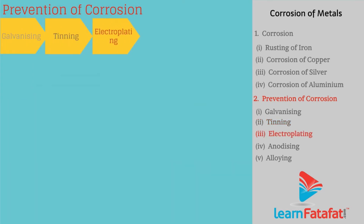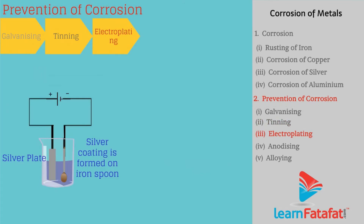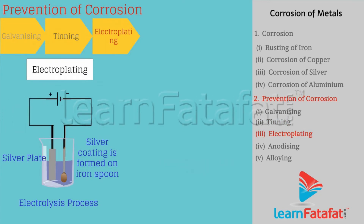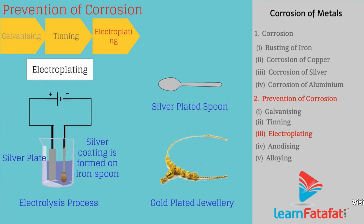Electroplating: Electroplating is a method in which a coating is formed on another metal by using electrolysis. For example, silver plated spoons, gold plated jewellery, etc.